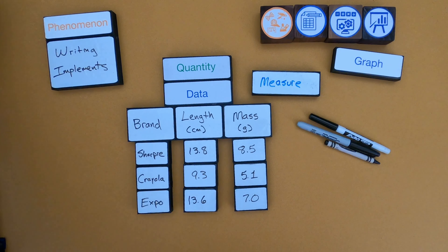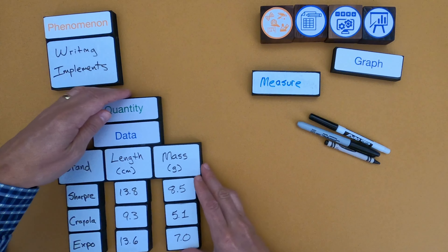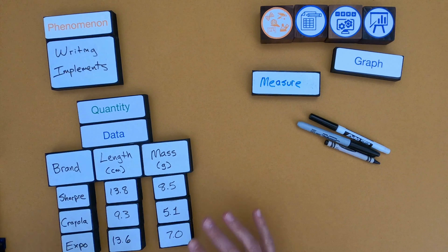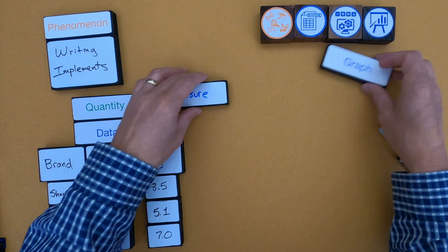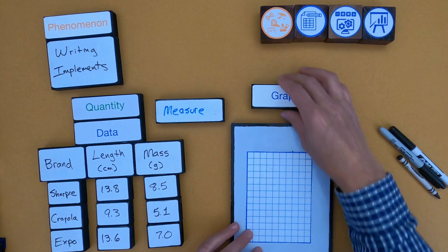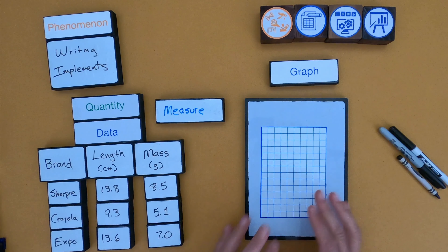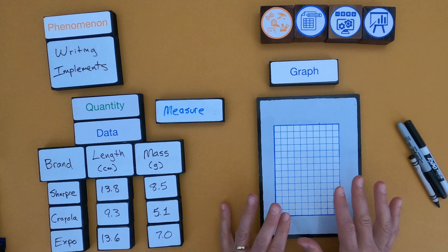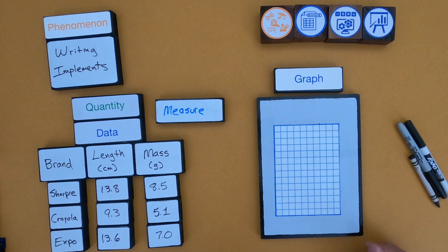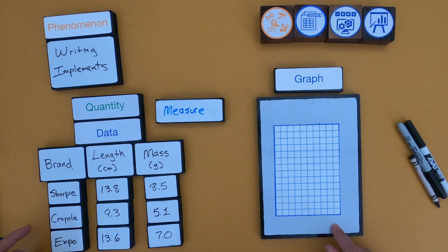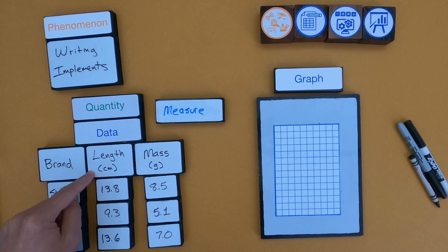Now I've created a data table with data in it, but it's not a graphical representation. To do that, now that we've measured, we create something called a graph. A graph is just a graphical representation of the data — a visual that more clearly shows how these writing implements compare. I'm going to put the brands across the bottom, and for the first graph I'm going to look at how the length compares.